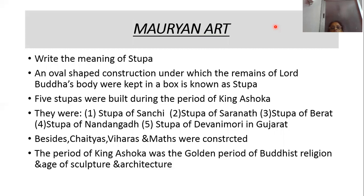Write the meaning of a Stupa: an oval-shaped construction under which the remains of Lord Buddha's body — such as his nails, teeth, hair, bones, and ashes — were kept in a box is known as a Stupa. That Buddhist temple is oval in shape.